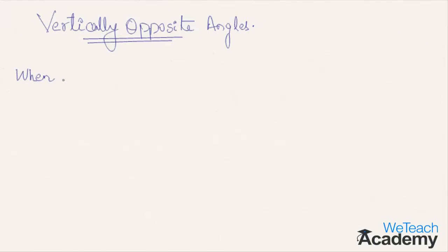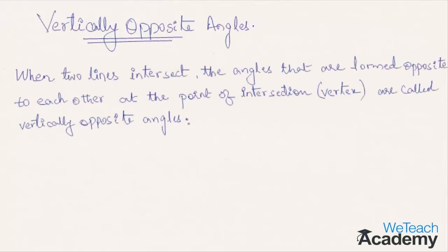When two lines intersect, the angles that are formed opposite to each other at a point of intersection or a vertex are called vertically opposite angles.